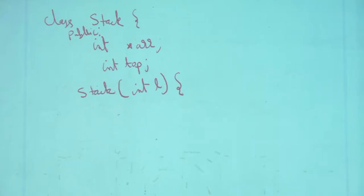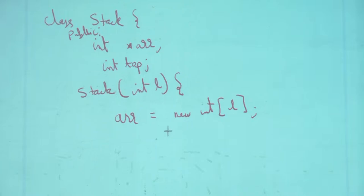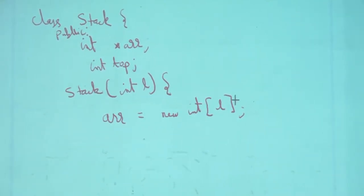In the constructor I will say arr = new int[L], which creates an array of a particular size. The size is an estimate. If you don't estimate correctly you will have underutilization or overutilization. I am assuming we know roughly how big the stack should be at maximum.